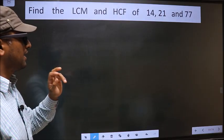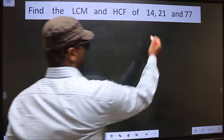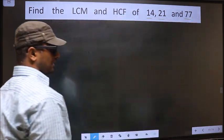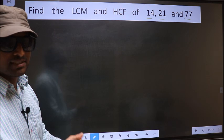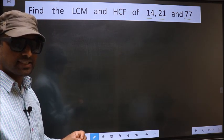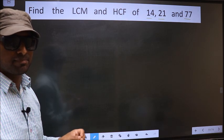Find the LCM and HCF of 14, 21, and 77. To find the HCF and LCM, first we should do the prime factorization of each number separately.